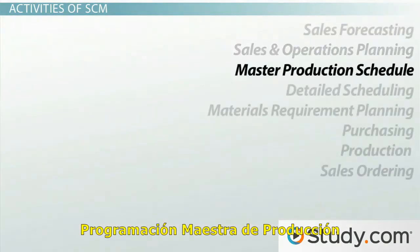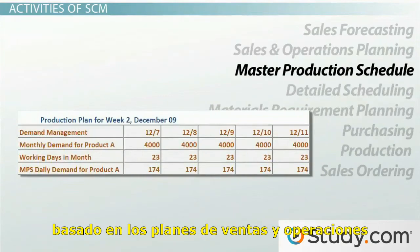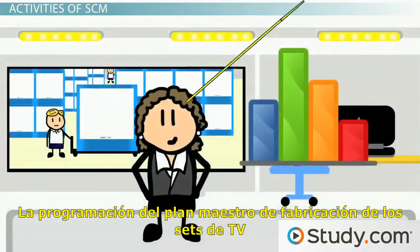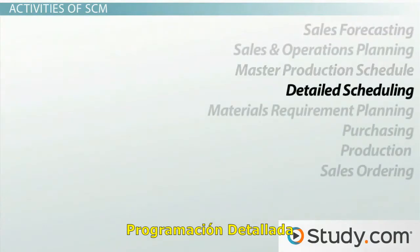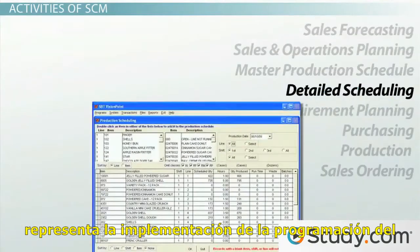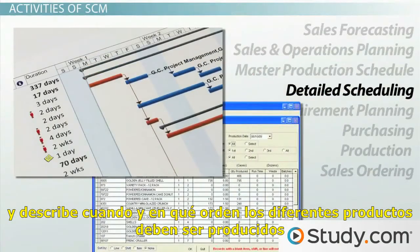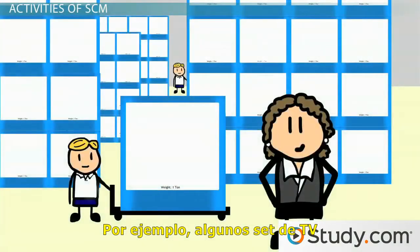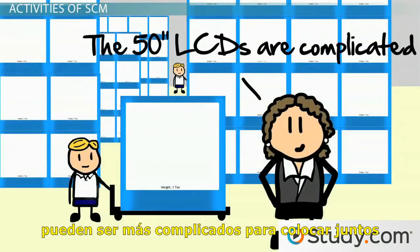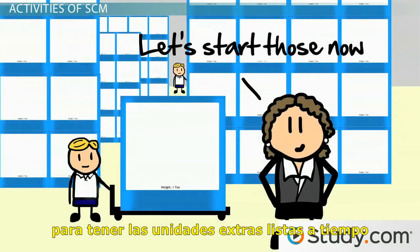A master production schedule sets out the production plan for all finished products based on sales and operations planning. The master production schedule for TV sets would include how many TV sets of each type need to be produced during certain periods. Detailed scheduling represents the implementation of the master production schedule on the work floor, describing when and in what order different products should be produced to meet overall production targets. For example, some TV sets may be more complicated to put together, so you may want to start their production a little earlier to get the extra units ready on time.